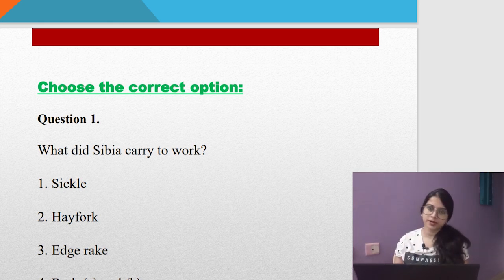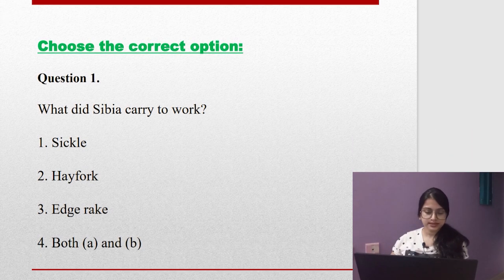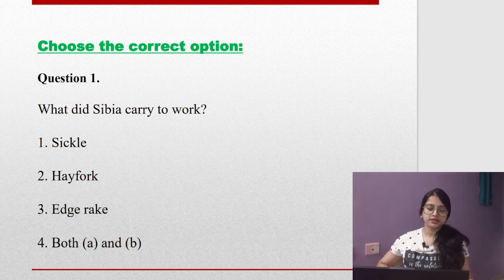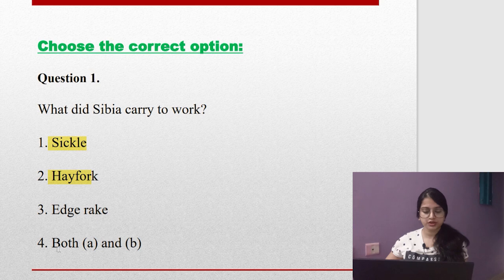Question number one: What did Sibia carry to work? Is it a sickle, is it a hay fork, is it an edge break, or is it both A and B? Yes, it was both a sickle and a hay fork, so the answer is option number four, both A and B.